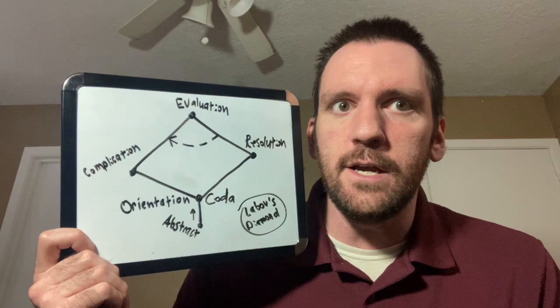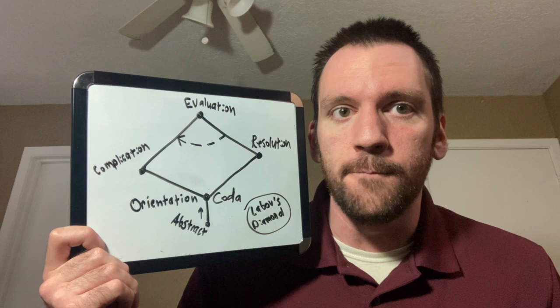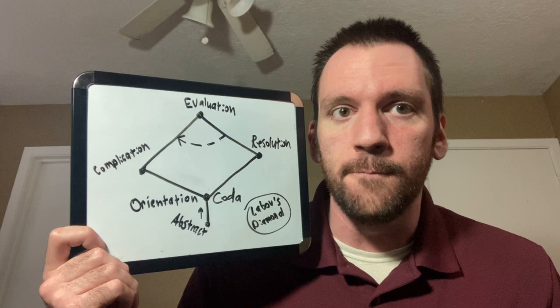Then we get the complication, we get the disruption to the story world, the evaluation is how the characters act or react, and they can do multiple things, which is why we have that little arrow there. Eventually, we get a resolution, how did things turn out, we get a coda, what was the point of that scene, and the cycle repeats.